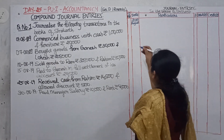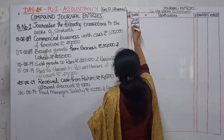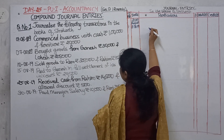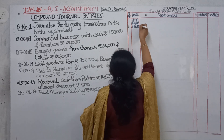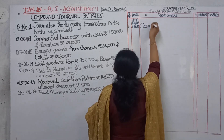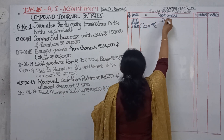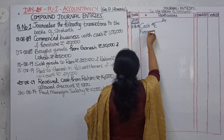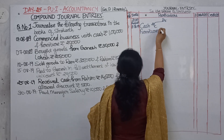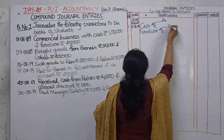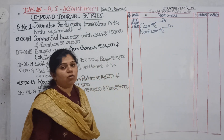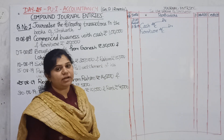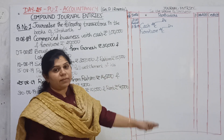Let us make a journal entry for this. Write down the date: 01-08-2019. What is coming into the business? Cash is coming in — so cash account, debit. What else is coming in? Furniture is coming into the business — therefore furniture account, debit. Both these are real accounts. For real accounts the rule is: debit what comes in, credit what goes out. So they both are coming in, that's why debit.